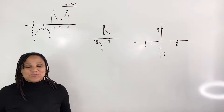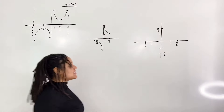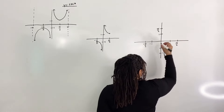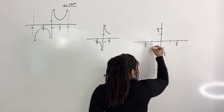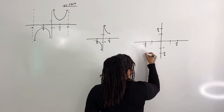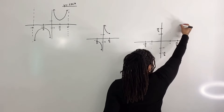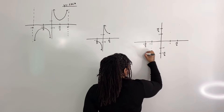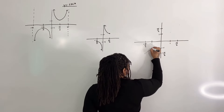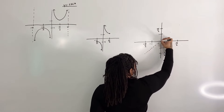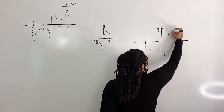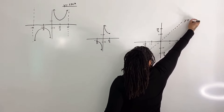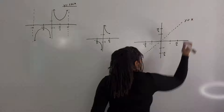Step 2: Draw the line y equals x. So I'm just going to put a few points and connect the dots. And that's y equals x.